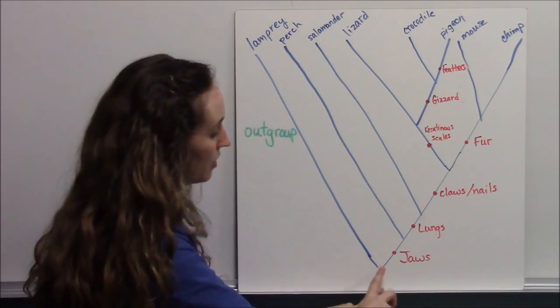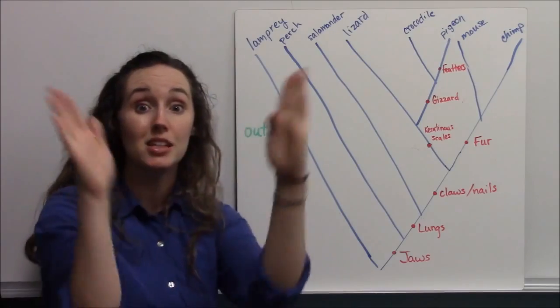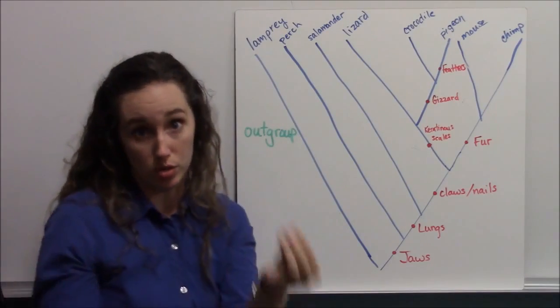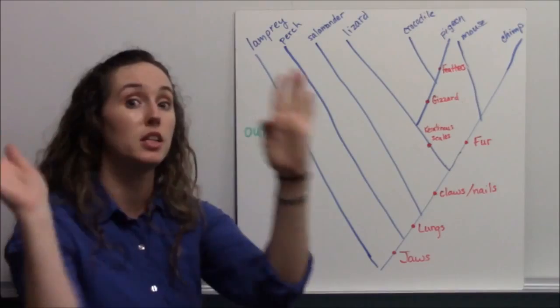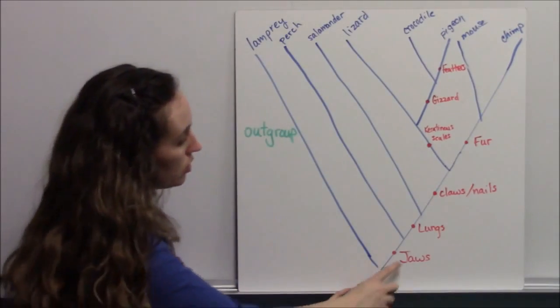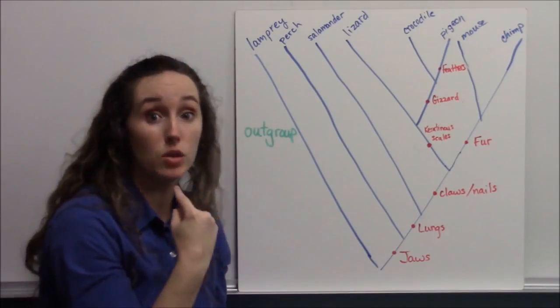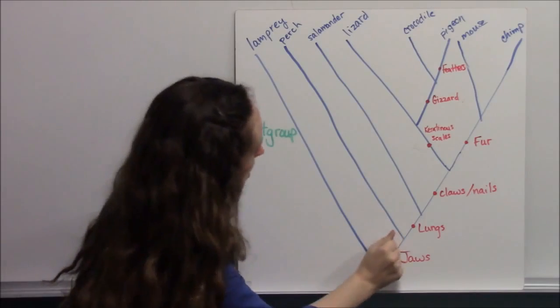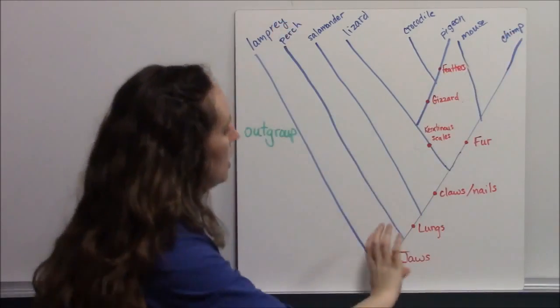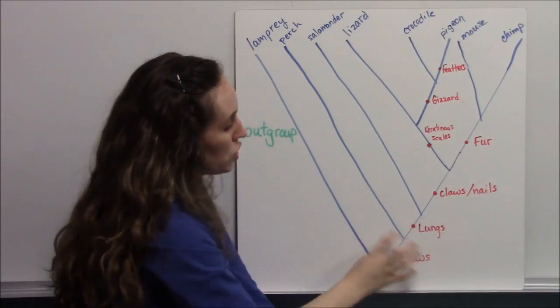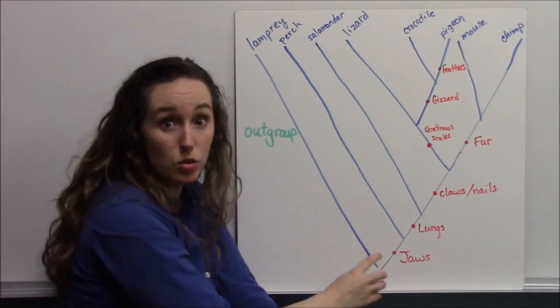And then at this node, there's a speciation event, some event at which a new trait was derived that split the lineage off. This new trait was jaws. And so now all living organisms, all of the organisms in this new clade branching off, share jaws as a derived trait.